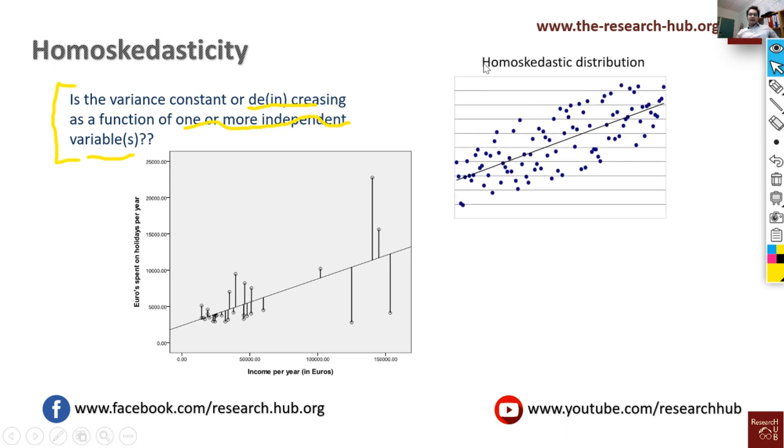Just to show you again, let's say this is homoscedastic distribution. If we hypothetically assume that here we have Y and here we have X values, then if we see the regression line we see that with increasing values of X the value of error terms are not increasing. Here by Y I actually refer to the error terms of the estimated regression model, and they're not increasing - they are constant with the increasing values of X. So that's what is homoscedasticity.